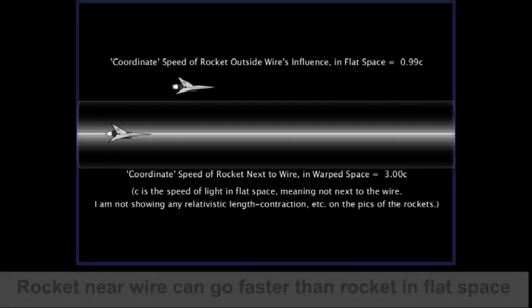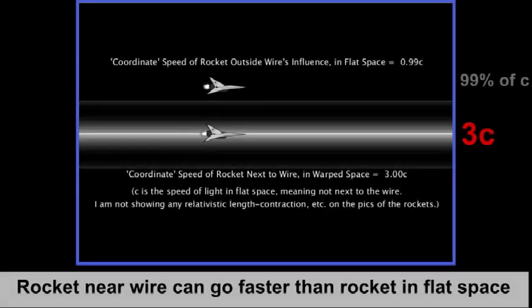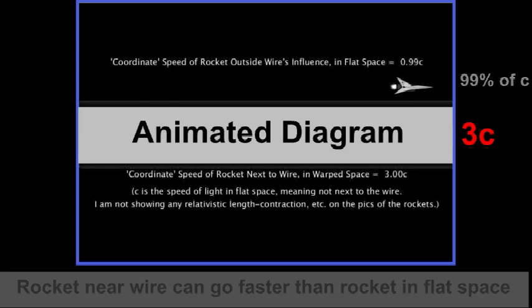This animation shows two rockets. The one outside the wire is traveling at 99% of the normal flat space speed of light, and the one inside the wire is traveling at three times the normal flat space speed of light, or 3C. Note that I'm not showing any relativistic effects, such as length contraction, on the rockets. This is basically an animated diagram that shows the position of the rockets over time.